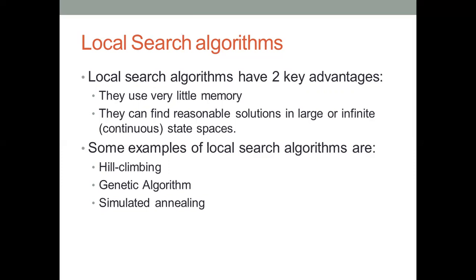Some examples of local search algorithms are hill climbing, genetic algorithm, and simulated annealing. Hill climbing and simulated annealing have plenty of intermediate states and we choose the best nearby possibilities and move on. Genetic algorithm operates on a set of solutions. Everything here is an optimization algorithm — you have plenty of solutions and you choose the best one.